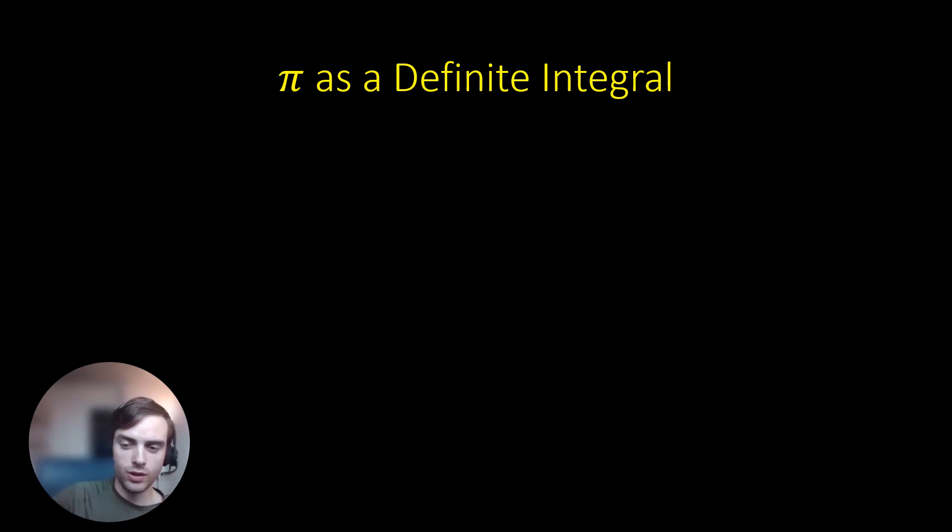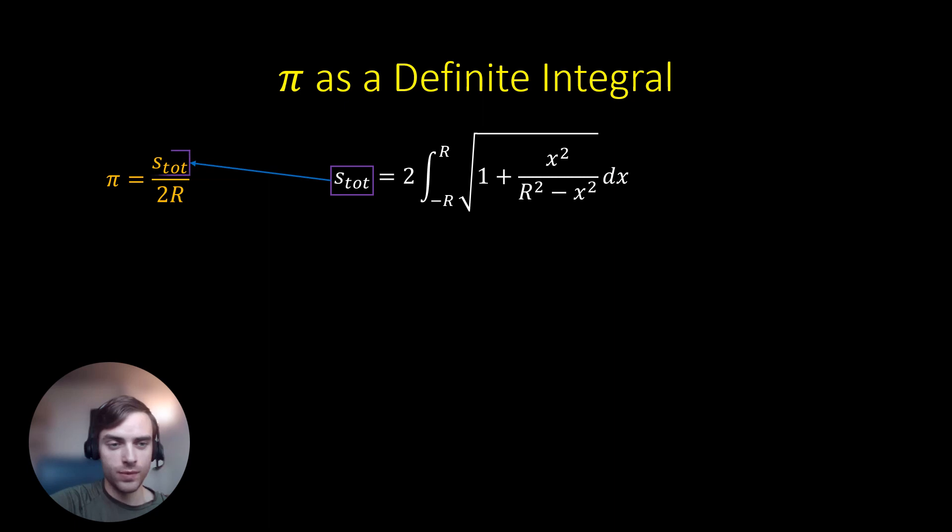Alright, so now we can express pi as a definite integral. So we have pi is equal to s_tot over 2r. And we also have s_tot is equal to a definite integral, as shown right there. And so we can substitute s_tot into our expression for pi, and we obtain pi is equal to this definite integral in green right there.